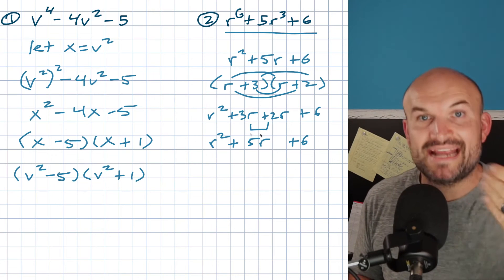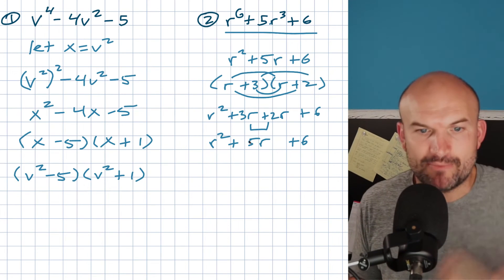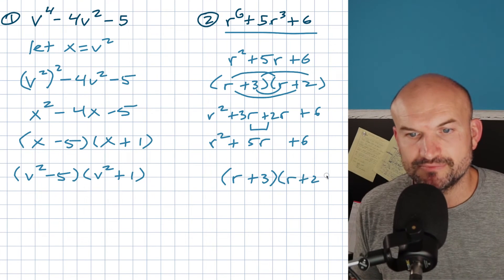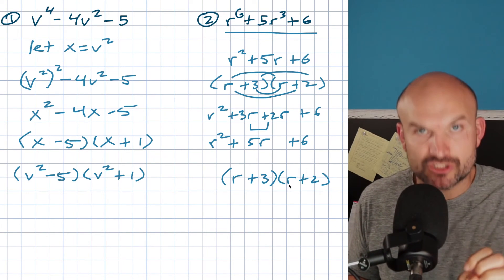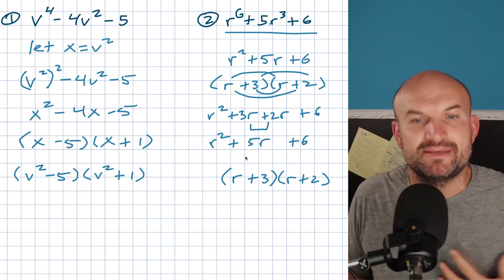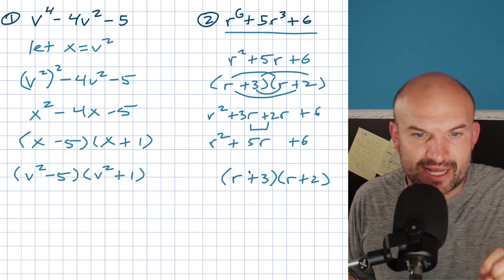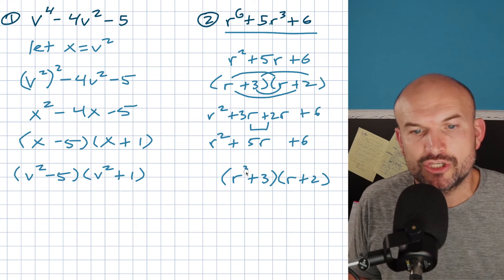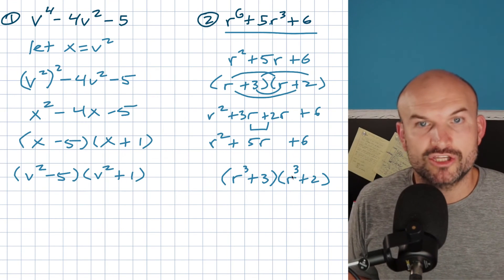So what if I just raise the power of my r? So let's go back to the factored form. The factored form was r plus 3 times r plus 2. When I multiply my middle terms and combine them, I want that to be an r cubed. So rather than multiplying r times 3 and r times 2, what if I multiplied an r cubed and an r cubed?